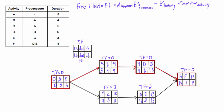Let's calculate the free float for activity A. The minimum early start of its successors — we have five and five, so we pick five. We subtract the early start of activity A, which is zero, and subtract its duration of five. So: five minus zero minus five gives a free float of zero.